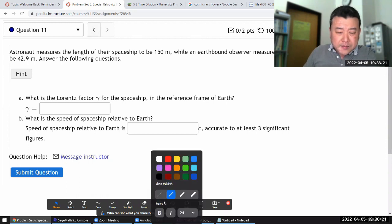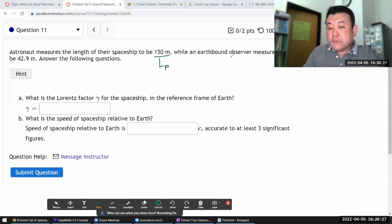I think that's the proper length, while an Earth-bound observer, where the spaceship is moving, measures it to be, so this is the contracted length.